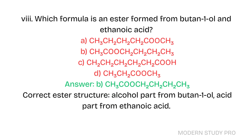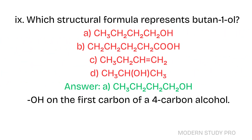Question 8: Which formula is an ester formed from butan-1-ol and ethanoic acid? Answer: B. The correct ester structure has the alcohol part from butan-1-ol and the acid part from ethanoic acid. Question 9: Which structural formula represents butan-1-ol? Answer: C. OH on the first carbon of a 4-carbon alcohol.